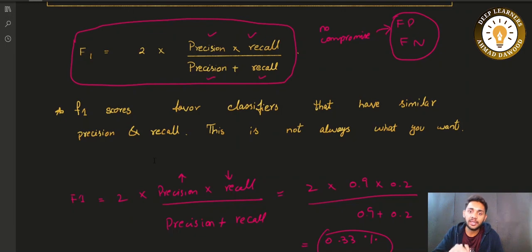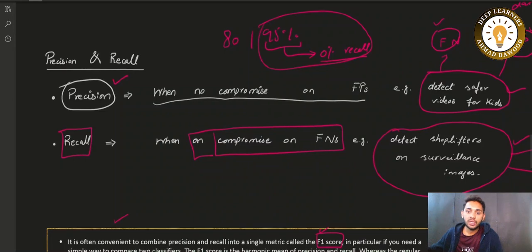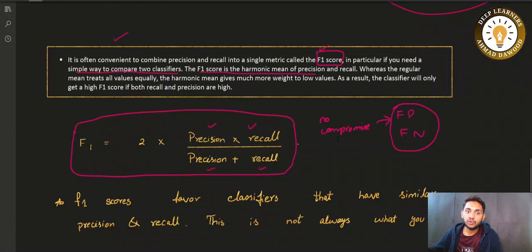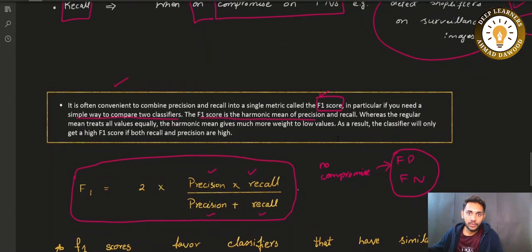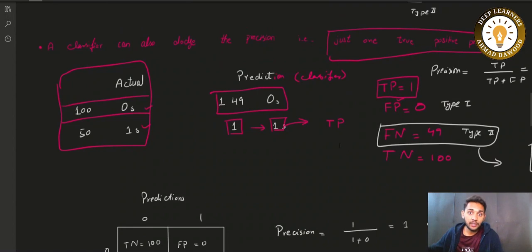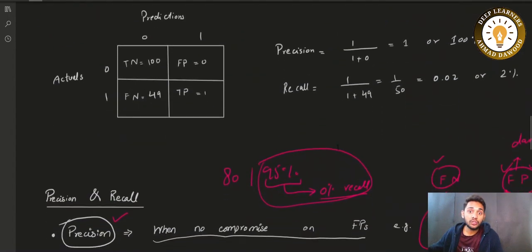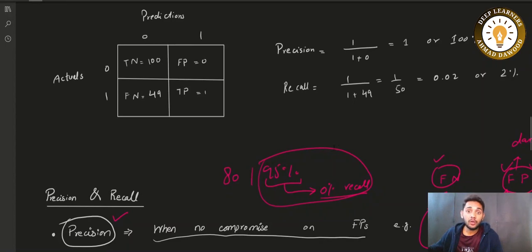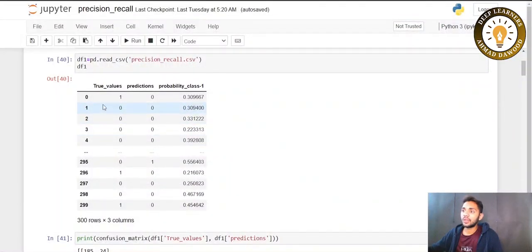If both type 1 and type 2 errors are equally important and you cannot compromise on either, use F1 score to evaluate your model. If you cannot compromise on false positives, use precision as the high priority. If you cannot compromise on false negatives, recall is your high priority. The choice depends on the project requirement — how much precision, recall, or F1 score you need.